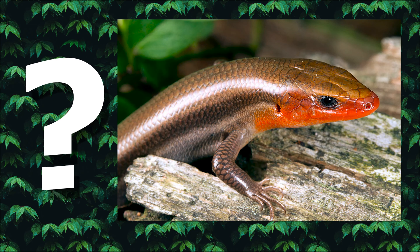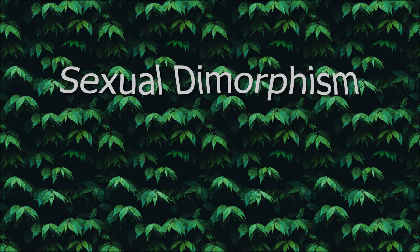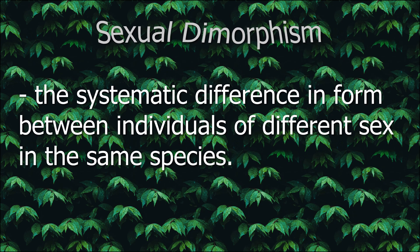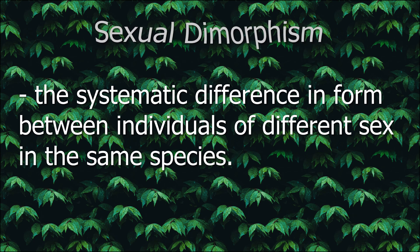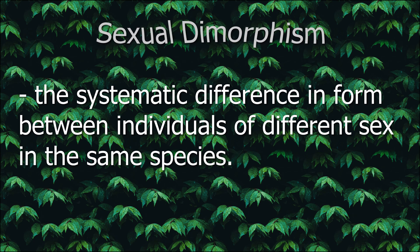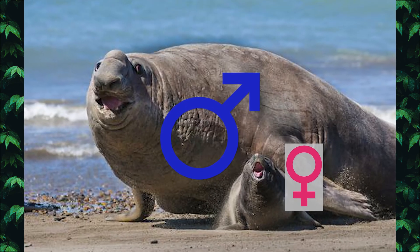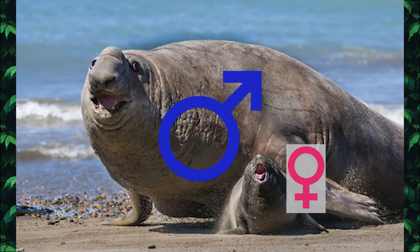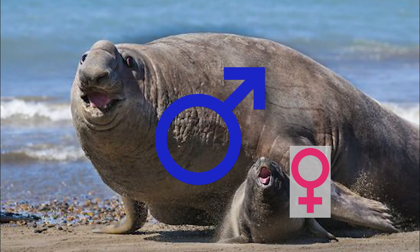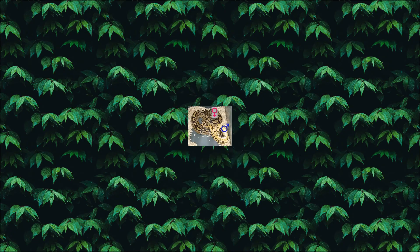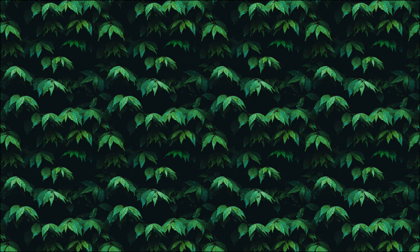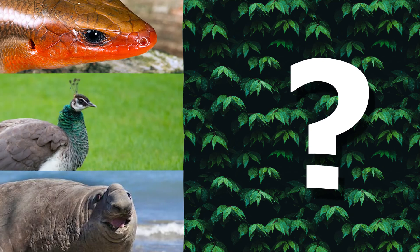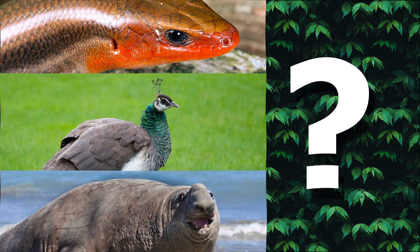That's because of a thing called sexual dimorphism. Sexual dimorphism is the systematic difference in form between individuals of a different sex in the same species. For example, in mammals it's common for the male of the same species to grow larger than the female, while in many reptiles and amphibians the opposite tends to be true.